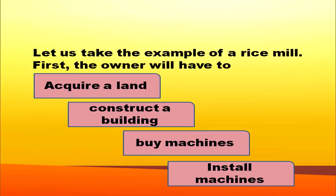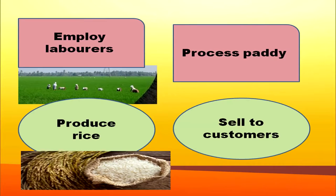Let us take the example of a rice mill. What all things the owner of that rice mill should do? He should acquire land at first, then construct a building, buy machines and install them. Without laborers, no organization can function, so the owner should employ workers. Then processing of paddy should be done to produce rice, and the owner can sell it to consumers. Various activities are done by the owner of every business organization.